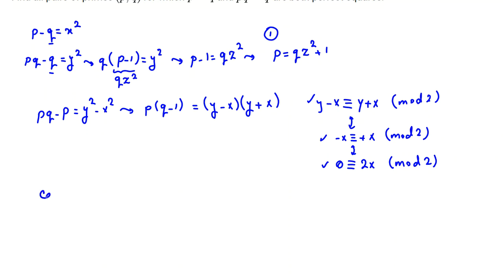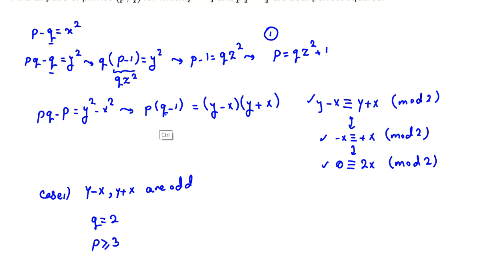If both Y minus X and Y plus X are odd, then P times (Q minus 1) is odd, so Q minus 1 must be odd, meaning Q equals 2. This is Case 1: suppose Y minus X and Y plus X are odd, so Q equals 2 and P is greater than or equal to 3 and must be odd. Let's consider equations 2 and 3 with Q equal to 2.